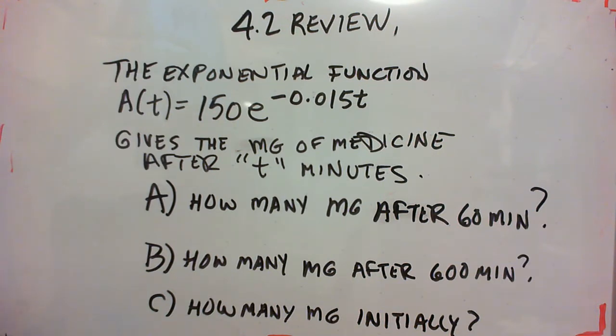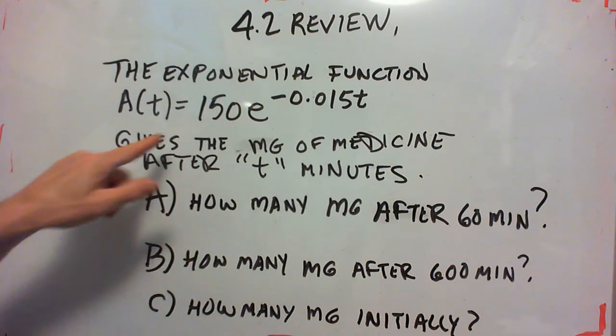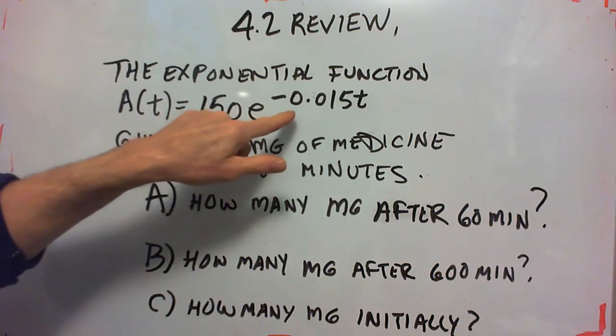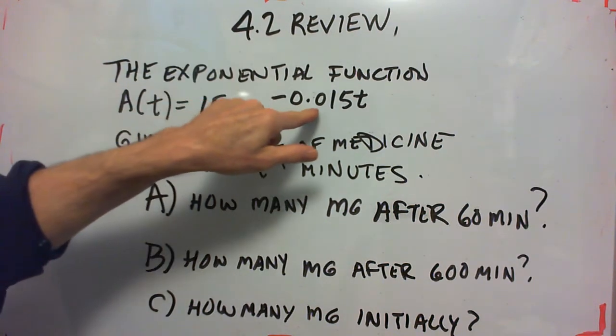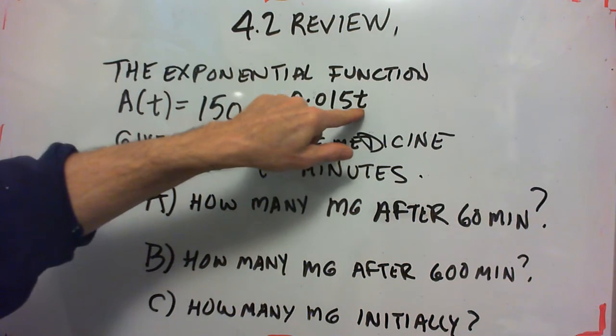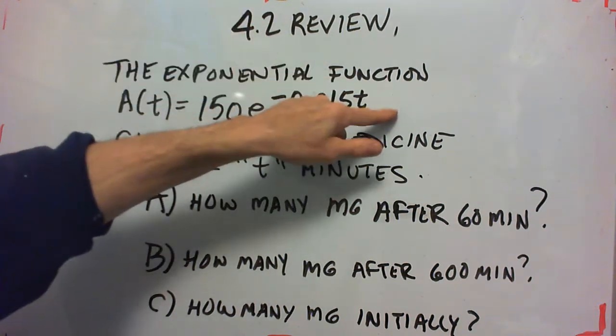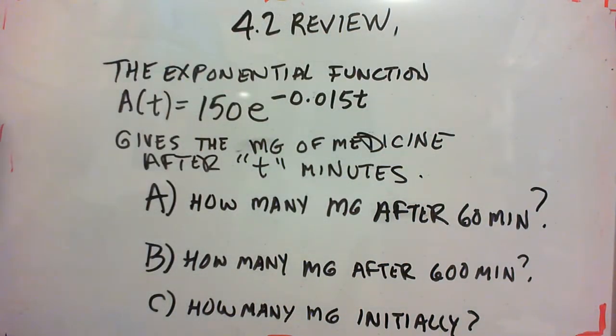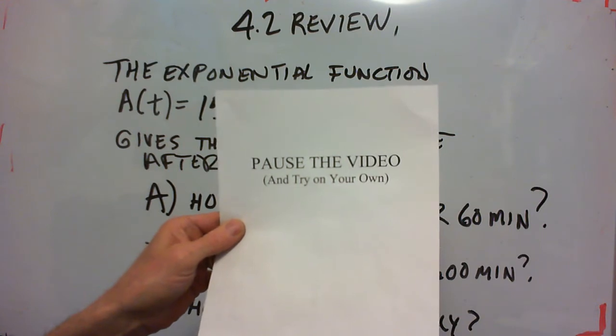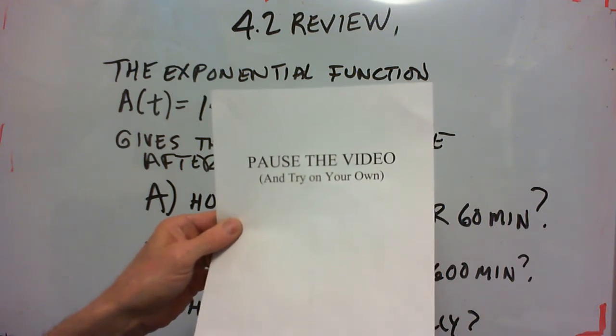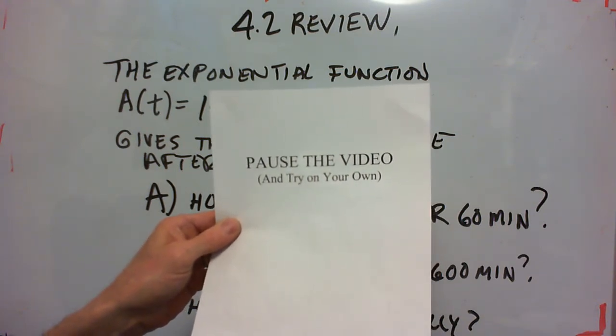See if you can calculate these. Use your e to the x key. Put parentheses around the negative 0.015 times the 60 in parentheses and calculate these out. So pause the video and do these. Don't just watch me do them. You need to be able to get these answers on your own.